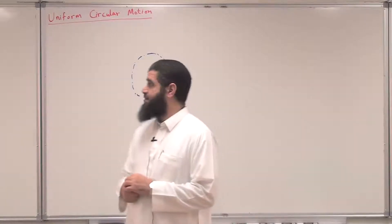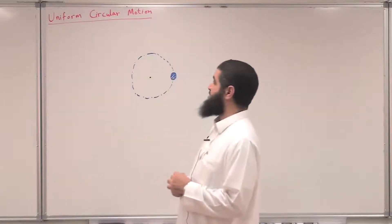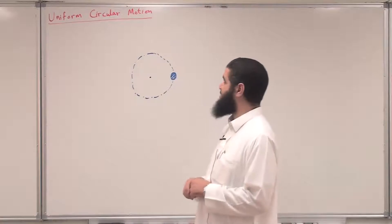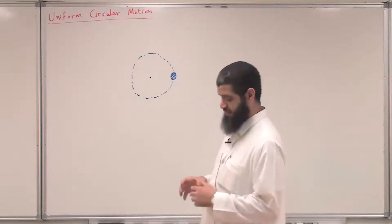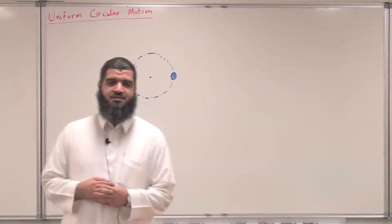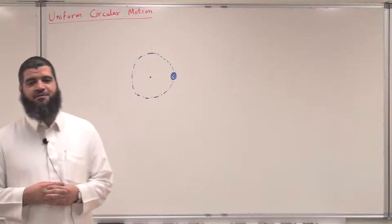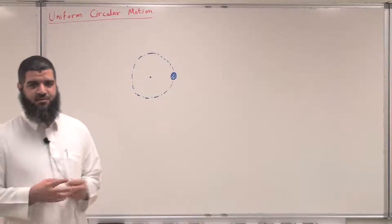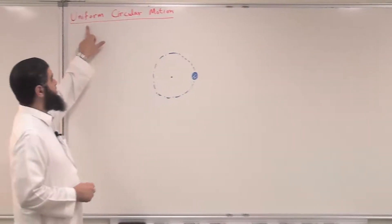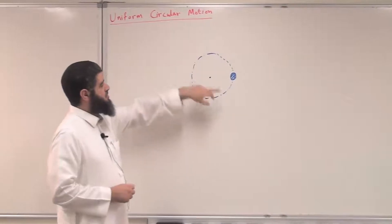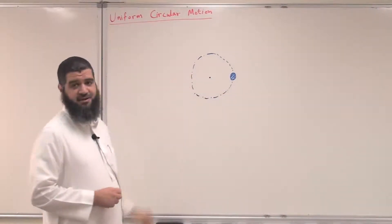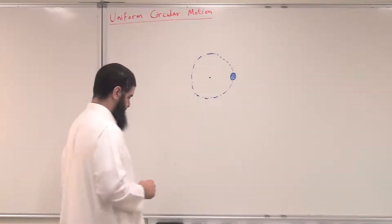Bismillah ar-Rahim. Let us start discussing the dynamics of uniform circular motion. Previously we talked about the kinematics of uniform circular motion — we mean by uniform motion: motion with constant speed in a circular path.